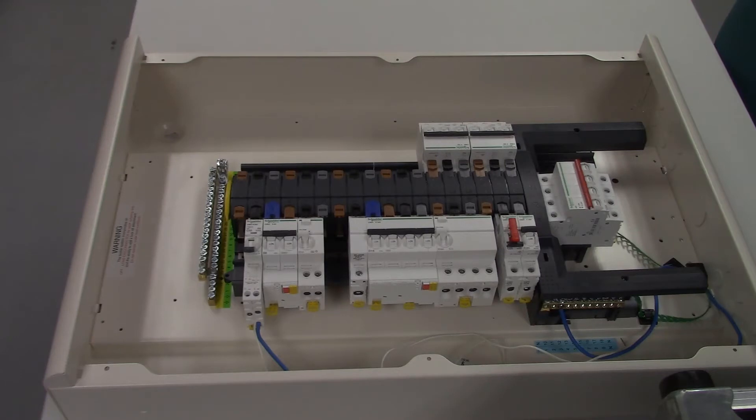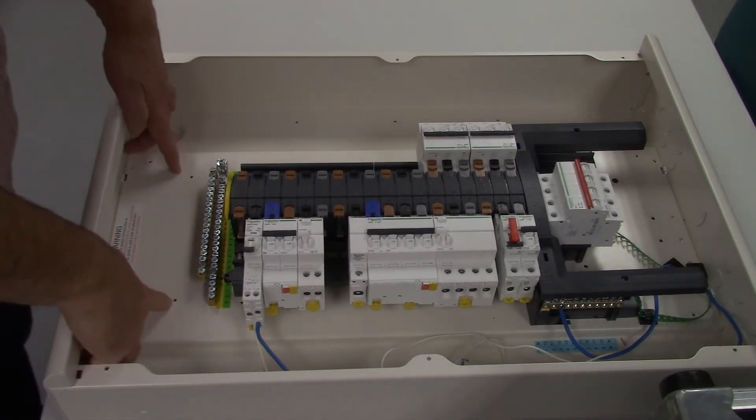Hello, my name is Mark, and today I'm going to show you how to fit an extra earth terminal bar. Firstly, you'll need to mark out and drill and tap two holes ready to accept the screws that hold the bar down.